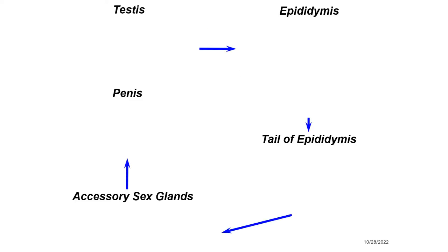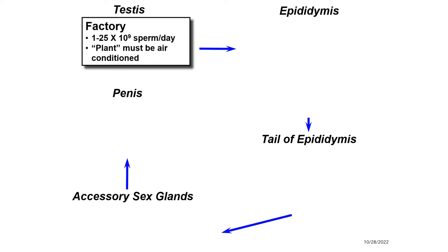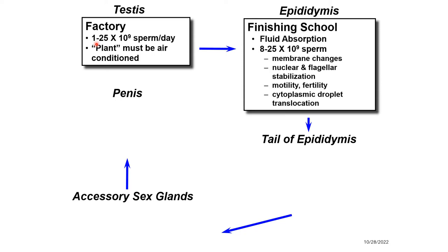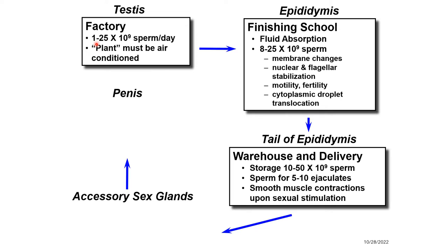The male reproductive tract is composed of various structures and we are going to start with the testes. The main function of the testes is to produce the spermatozoa. The testes is analogous to a factory — a factory has lots of equipment within it and produces an output. The output of the testes is the spermatozoa, and just like a factory, the equipment within must be functioning well in order to produce that output.